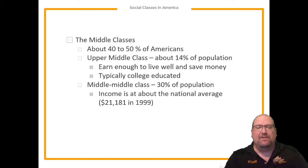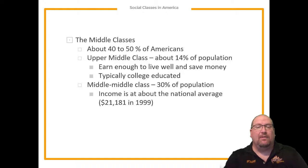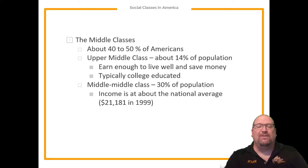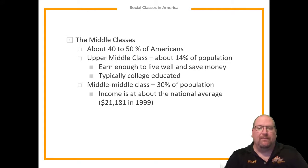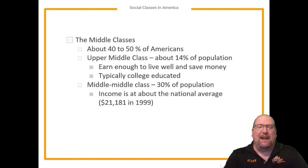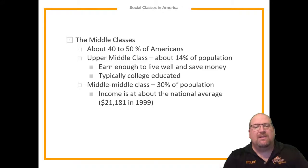Moving down the list, we come to the middle ground — the middle class. About 40 to 50 percent of Americans are in the middle class. The upper middle class is about 14 percent of the population; these people tend to earn enough money to live well. They're not rich, but they're getting by comfortably — they can save their money, they're not buying Ferraris or mansions, but they're earning enough. Typically, upper middle class people have attended college and are well-educated.